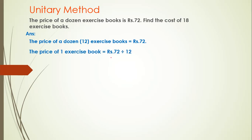The price of one exercise book equals 72 divided by 12. We get 72 divided by 12 equals 6. So the cost of one exercise book equals rupees 6. Now we have the cost of one exercise book, and we will easily find the cost of 18 exercise books by multiplying rupees 6 with 18.